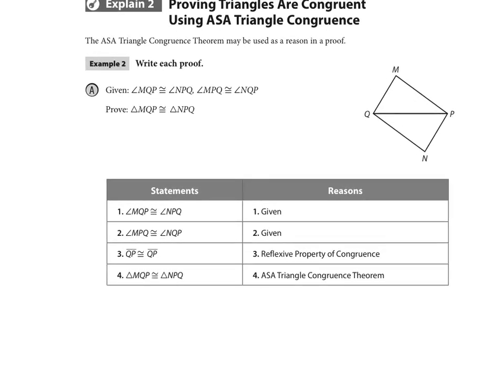Now one of the things I do is I always write in my picture what the words tell me. So for instance, this first given statement is angle MQP. This angle right here is congruent to NPQ. And then I write it down here and I say given.